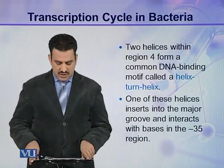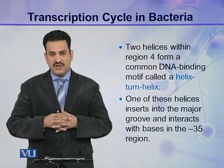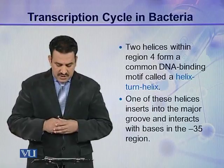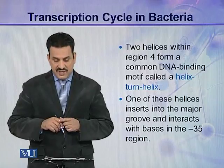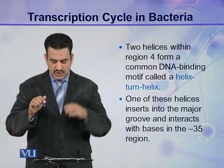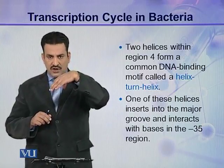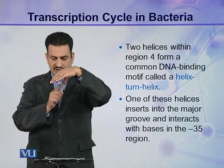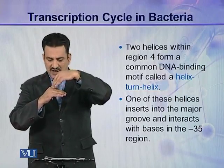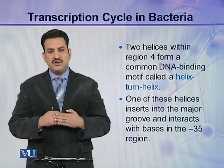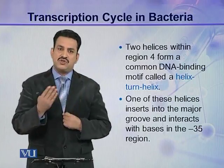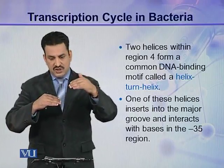Two helices within region 4 form a common DNA binding motif called a helix-turn-helix. This motif is located in region 4 of the sigma factor. One of these helices inserts into the major groove of the DNA — you may recall the major groove and minor groove in the double helix structure of DNA — and interacts with the bases in the minus 35 region.